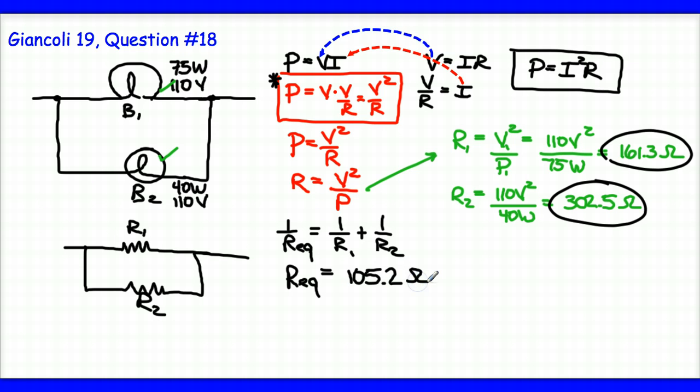Once I deal with that, I get my equivalent resistance is equal to about 105.2 ohms, and if I want to deal with significance, I can call that 110 ohms as the equivalent resistance of those two bulbs.